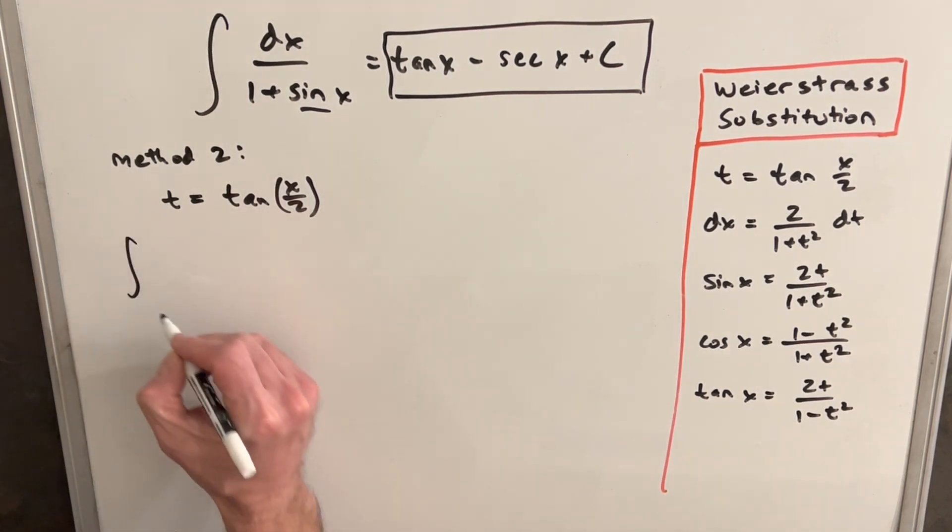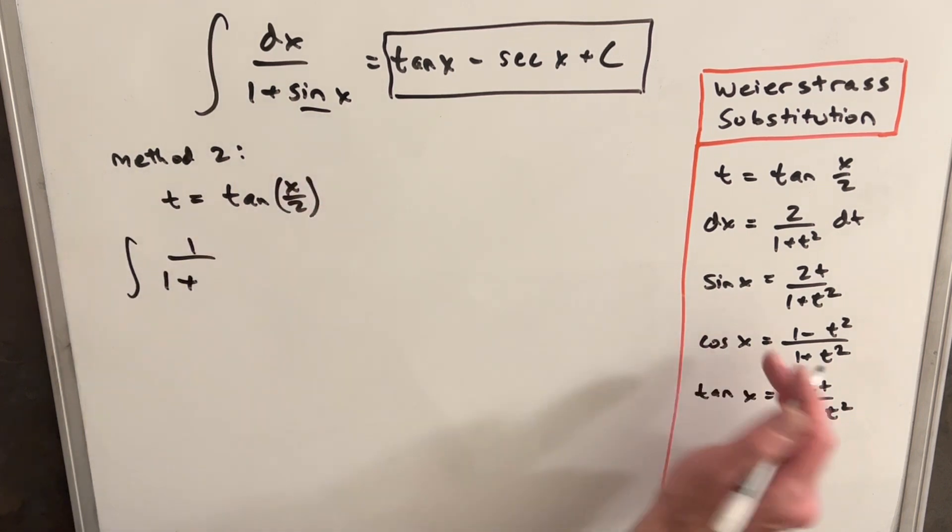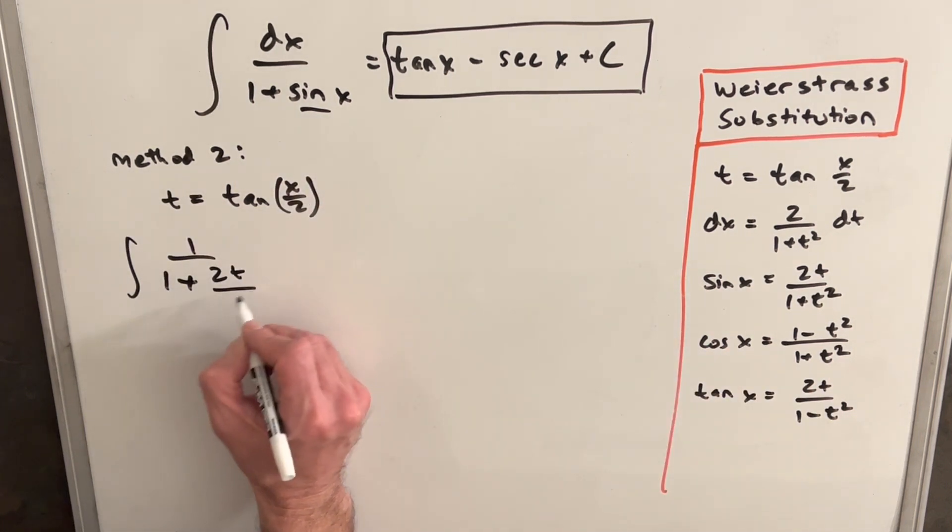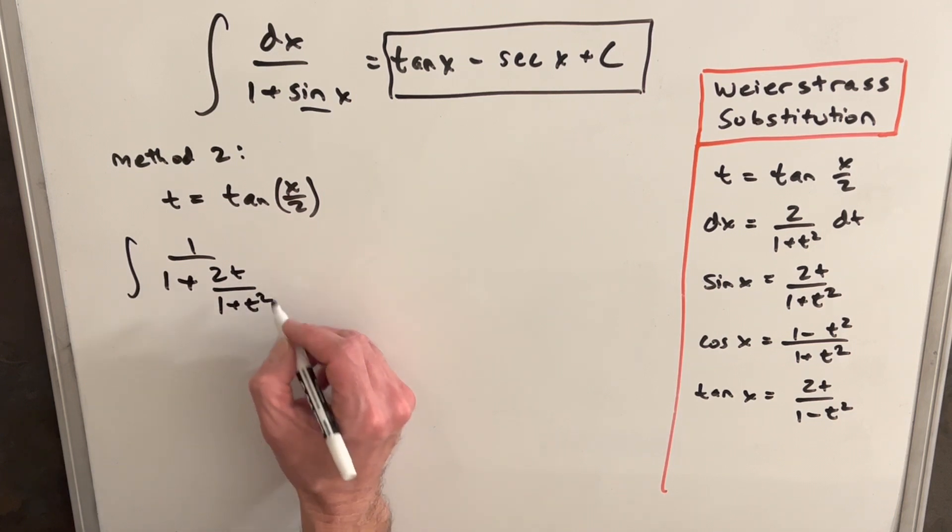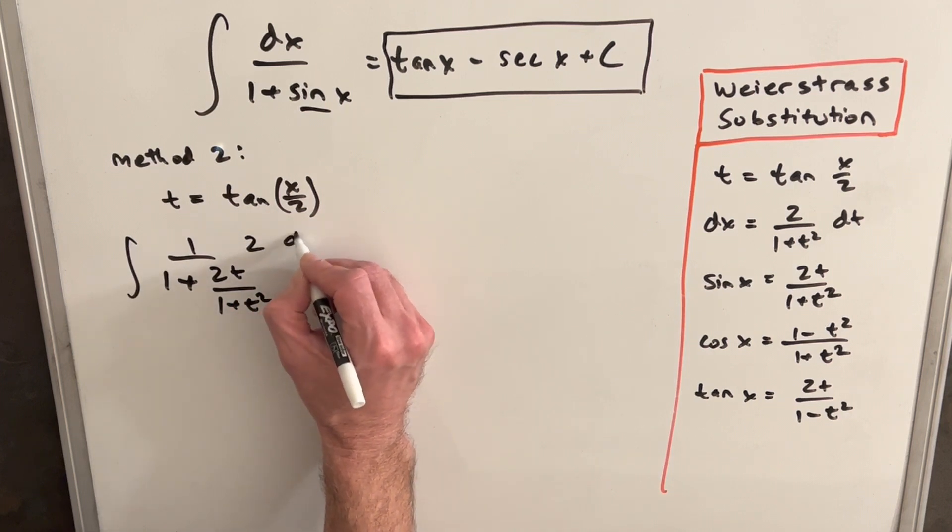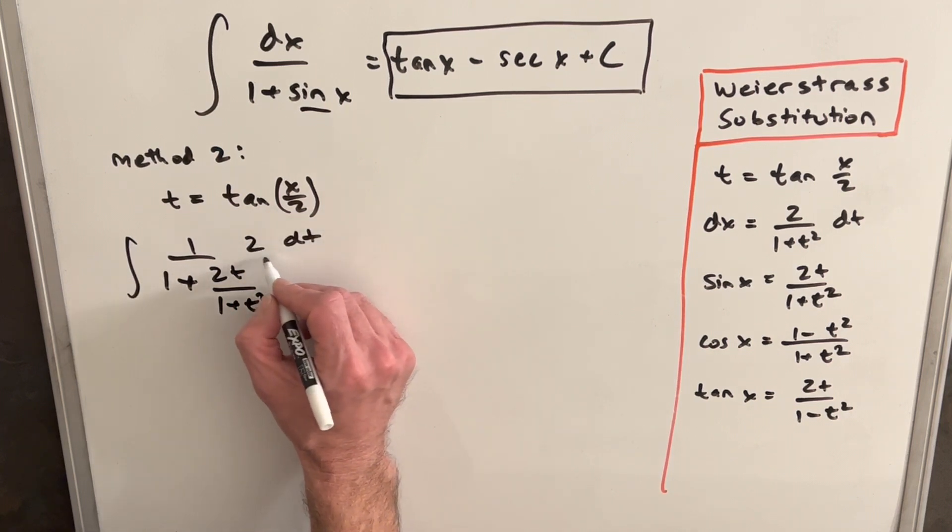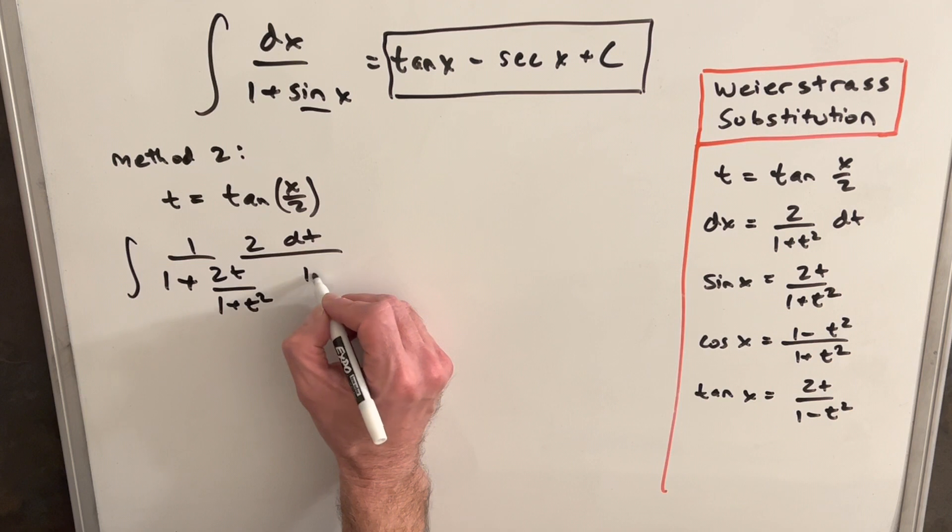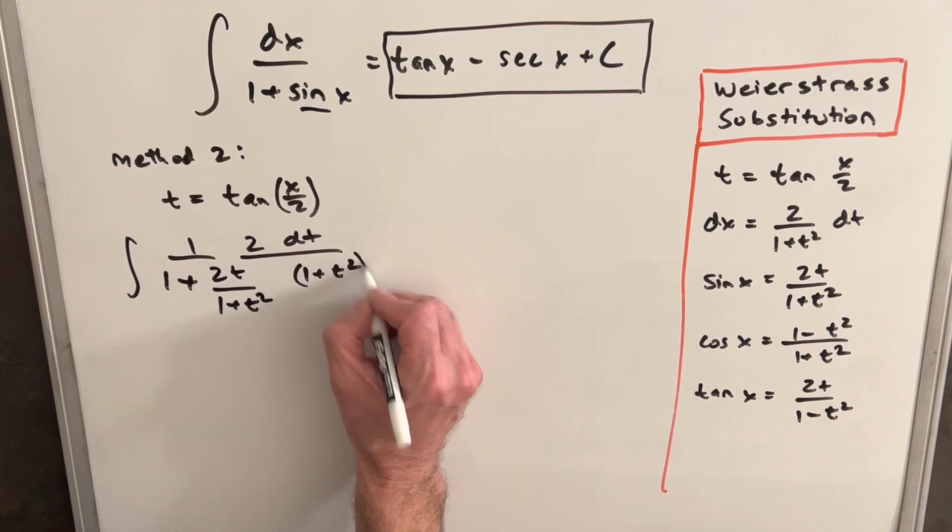So we'll go ahead and make the substitution, just write a one in the numerator. We're going to have one plus our sine value, which is two t over one plus t squared. And then we need our dx, which is going to be two dt, and we'll write the one plus t squared in the denominator.